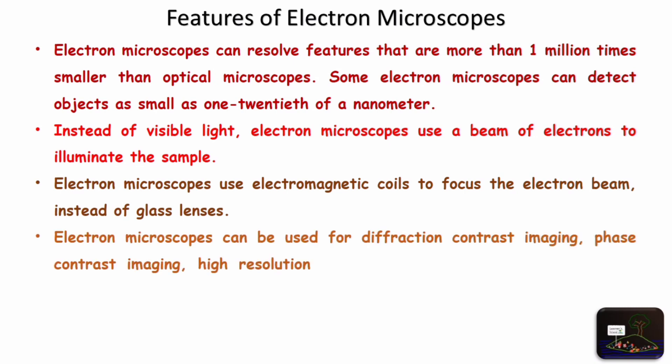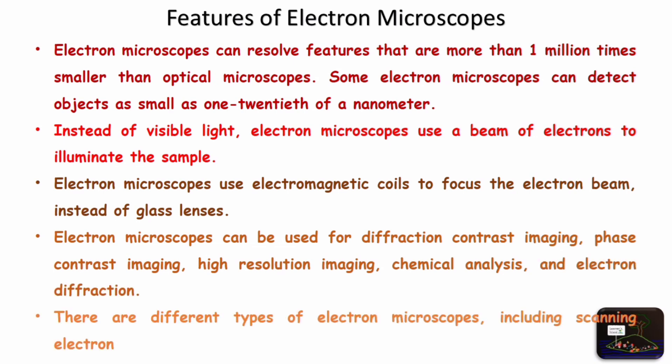Electron microscopes can be used for diffraction contrast imaging, phase contrast imaging, high-resolution imaging, chemical analysis, and electron diffraction. There are different types of electron microscopes: scanning electron microscopes, SEM, and transmission electron microscopes, TEM.